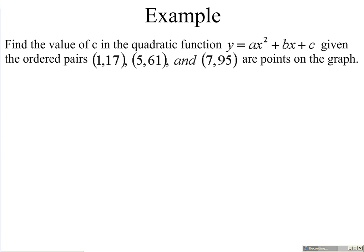One example we're going to look at here with quadratic function. Find the value of c in the equation y equals ax squared plus bx plus c, given the ordered pairs (1,17) and (5,61) and (7,95) are points on the graph.